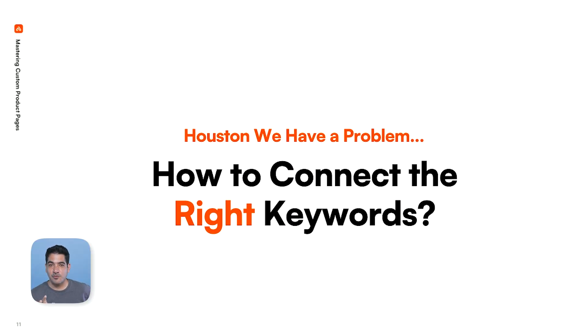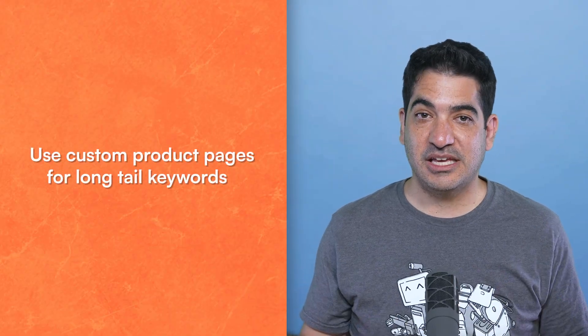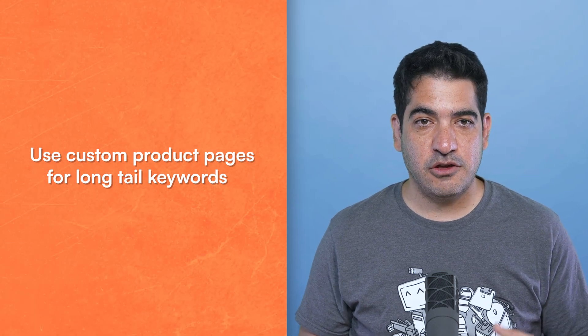If keywords only come from the keyword list, what do you do? You can't take main keywords from the name and duplicate them into the keyword list — we know that's awful. You can't take keywords from the screenshots because Apple doesn't index them. So I thought about two different ways to do this. My first approach is to use custom product pages for long-tail keywords. Have your default product page cater to the main keyword, and then run all the long-tail keywords — which you're likely putting in the keyword list already — with custom product pages.